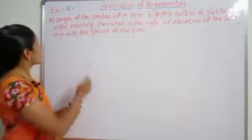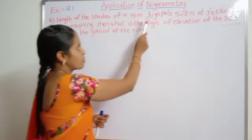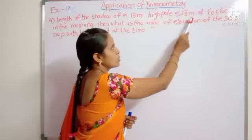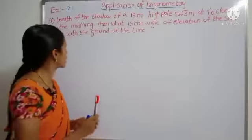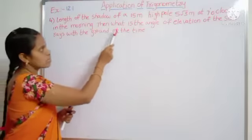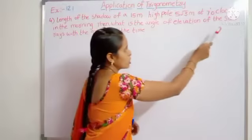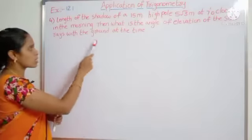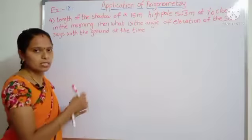See the fourth question: Length of the shadow of a 15 meter high pole is 5 root 3 meters at 7 o'clock in the morning. Then what is the angle of elevation of the sun rays with the ground at that time? What is this question meaning?